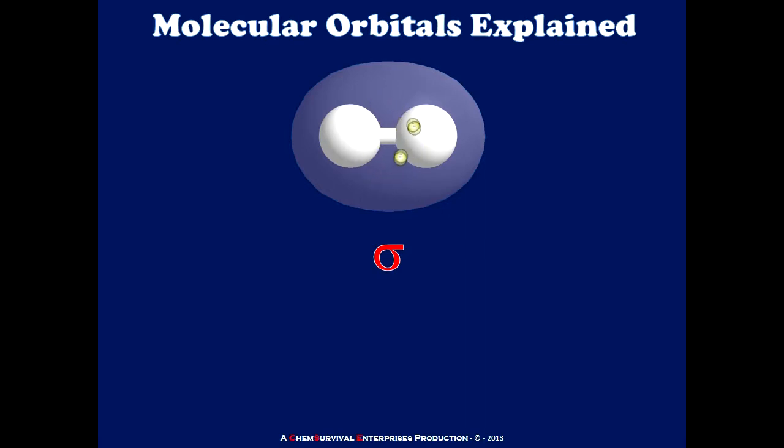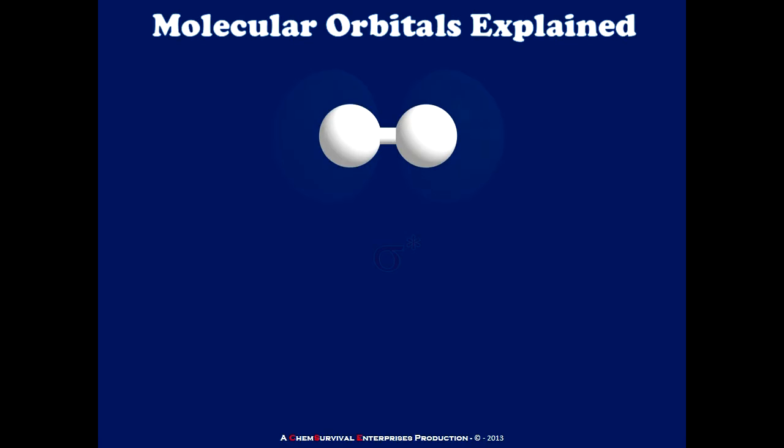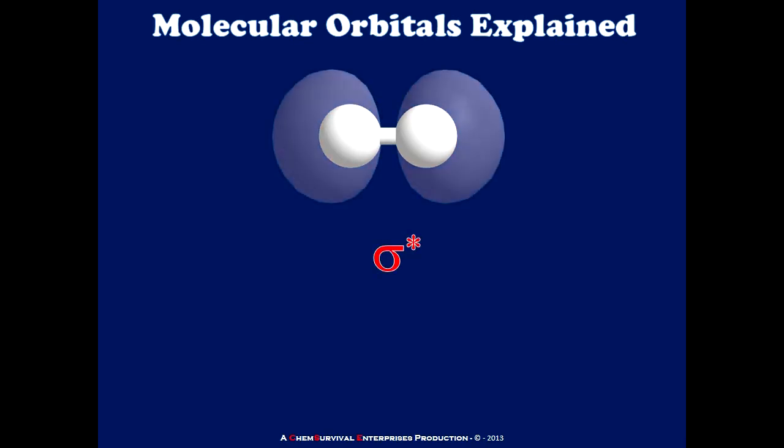The second molecular orbital which forms in this system is known as the sigma star. You'll notice immediately that the sigma star molecular orbital contains very little electron density in between the nuclei, and in fact placing electrons in this location in space does nothing to stabilize the molecule.